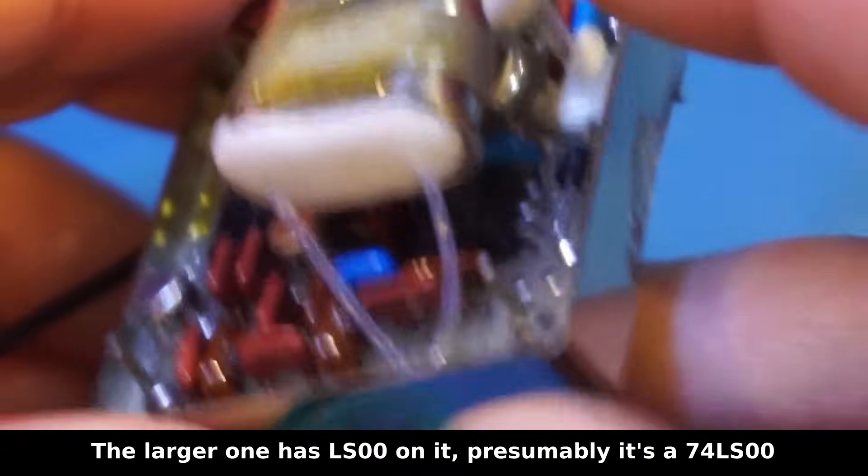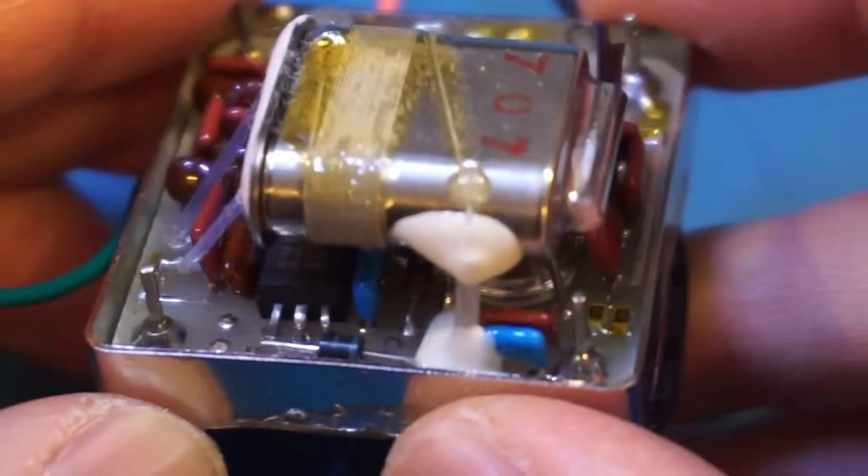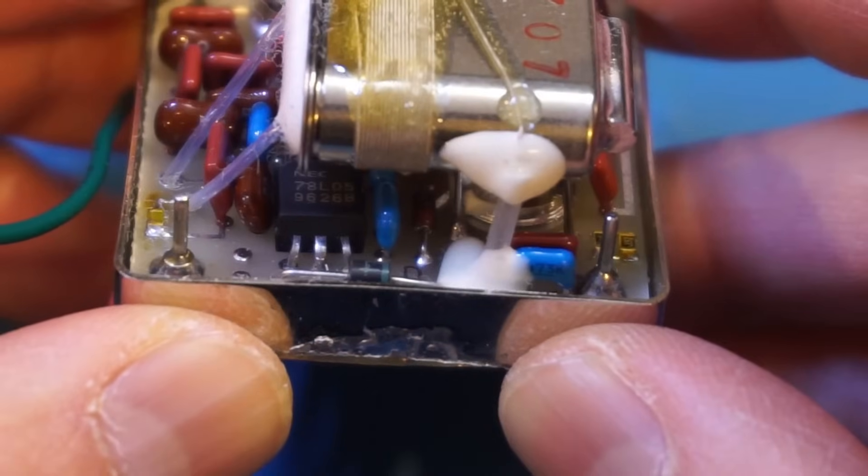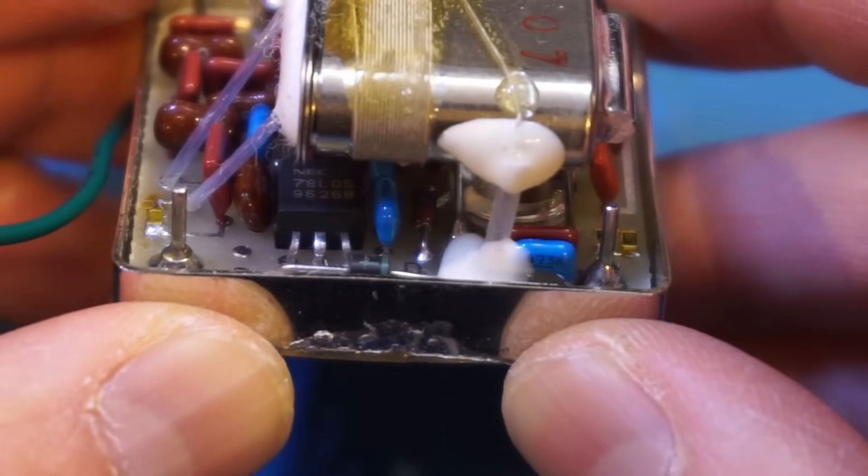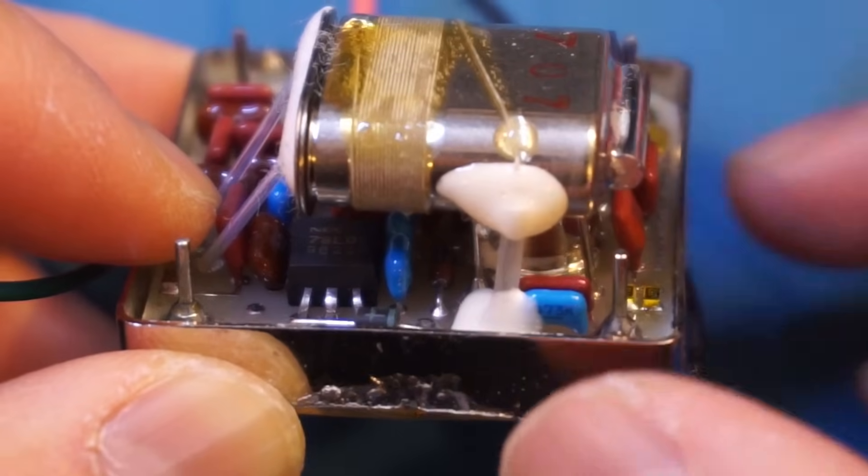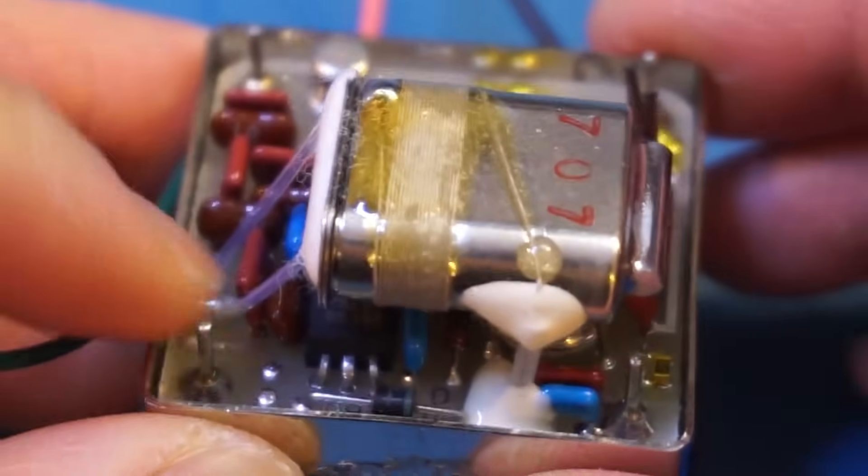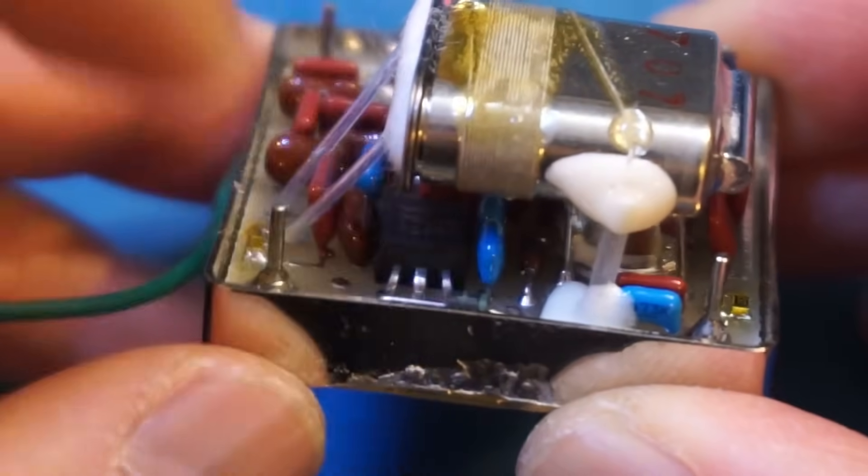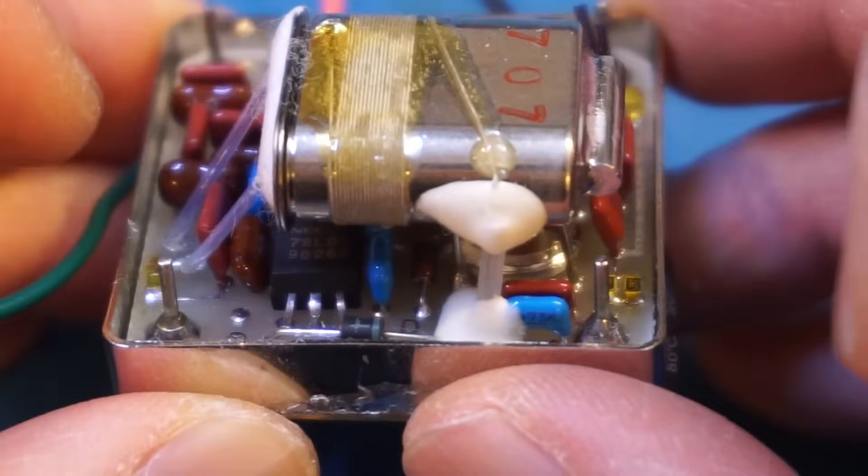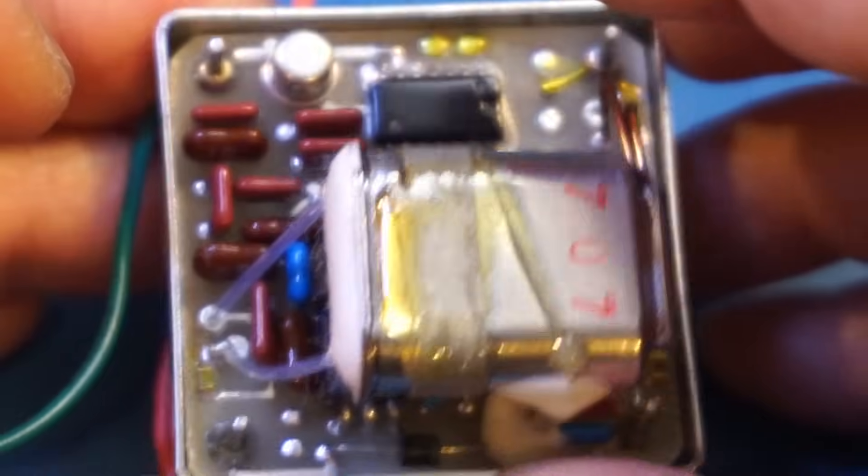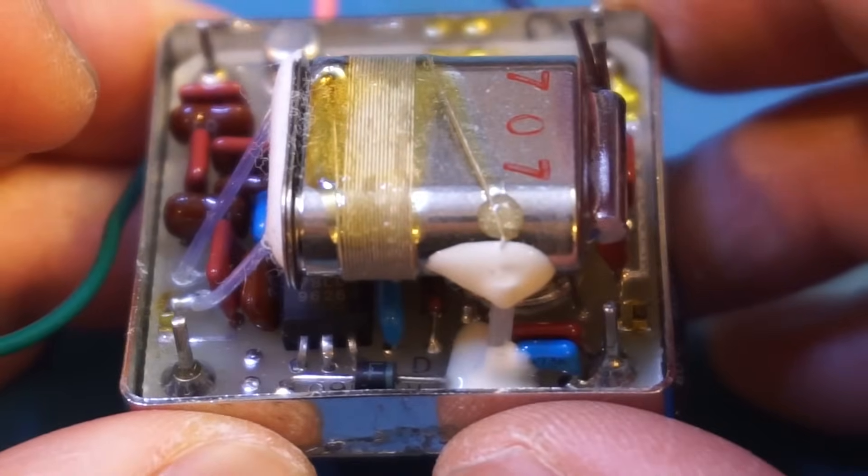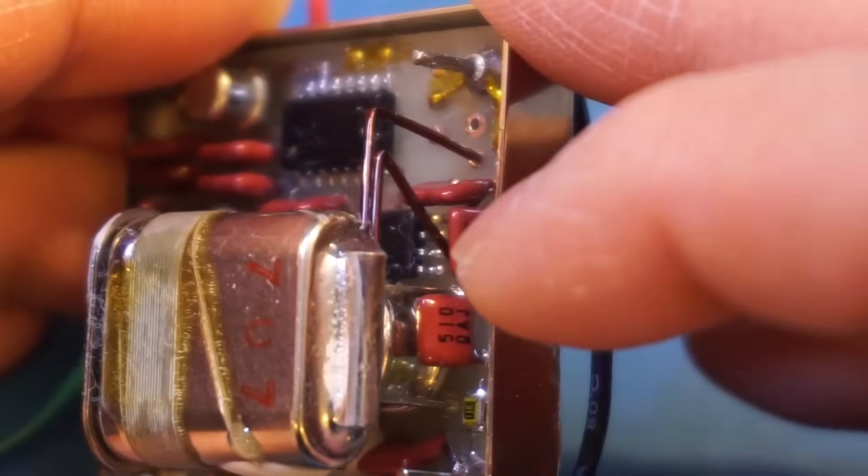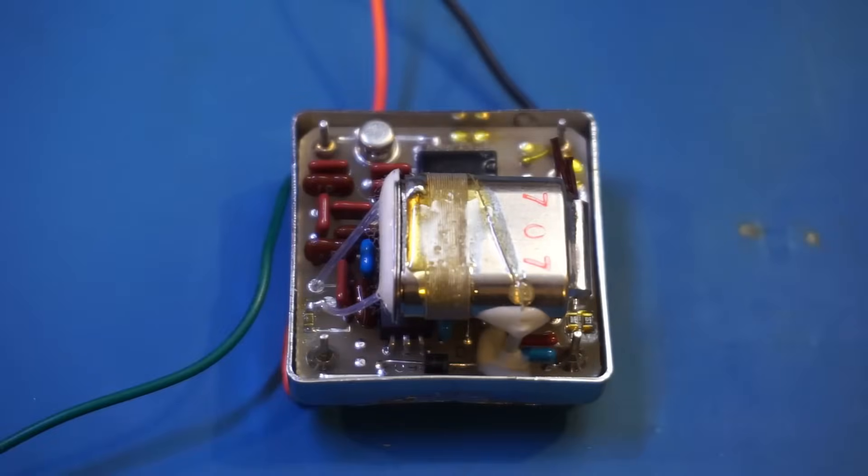We also have a good old 7805 linear regulator at the bottom there, and the marking is visible. This crystal oven is powered by 12 volts, so that linear regulator is used to regulate the internal voltage to 5 volts. If I have to guess, the chip up here is probably a 74 series logic gate, and the chip down there may be an op-amp of some sort. That's pretty much what's inside this oven-controlled crystal oscillator.